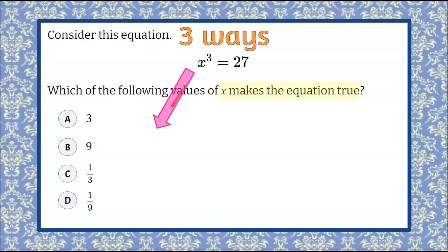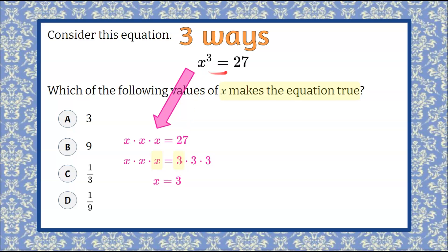Here's the first way: x cubed can be written as x multiplied by x multiplied by x. This exponent means take your base and multiply it by itself three times. So a value multiplied by itself three times needs to equal 27. We can rewrite 27 as a product of the same factor three times: 3 times 3 is 9, and 9 times 3 is 27. So x times x times x equals 3 times 3 times 3, which means x equals 3. Therefore, 3 cubed equals 27.